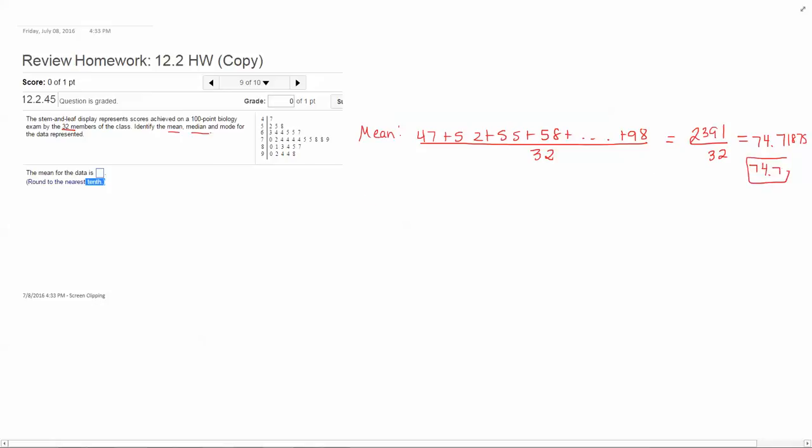Next let's find the median. The median is the number that is in the middle when the data is listed in order from least to greatest. Since I have 32 numbers, let's find what half of that is. 32 divided by 2 is 16.